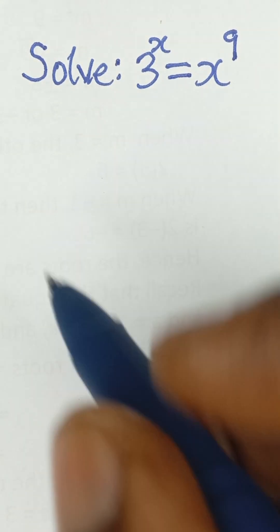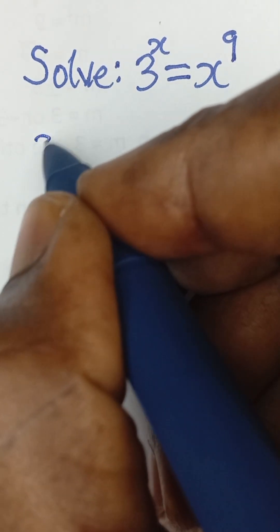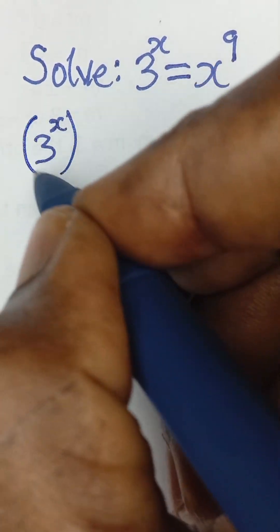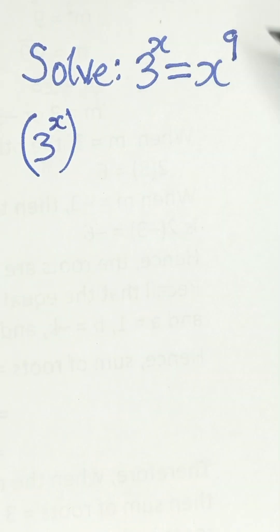Now for us to solve this, we are going to take 3 raised to the power x and then raise it to the inverse of 9 multiplied by x.